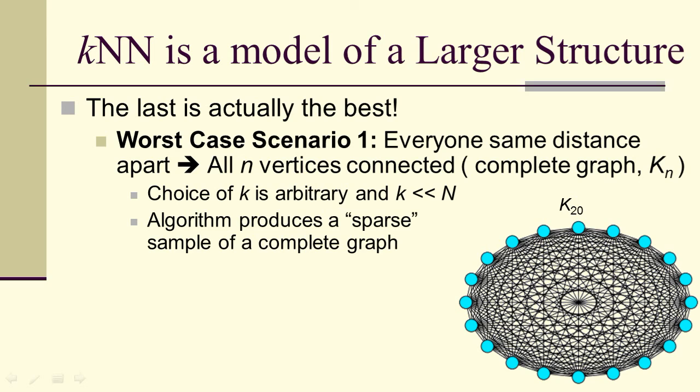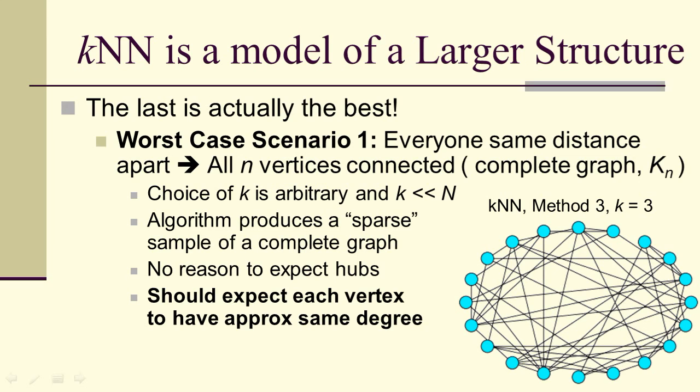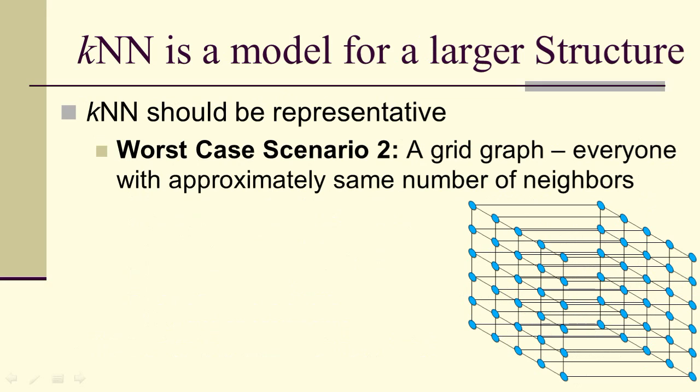What happens if you apply a K nearest neighbor's algorithm to it? The choice of K is arbitrary, and we always choose K much smaller than N for computational reasons. The algorithm produces a sparse sample of a complete graph. Notice, because it's a sparse sample of a complete graph, there really aren't any hubs because no vertex is any more likely to be a hub than any other. We should expect each vertex to have approximately the same degree. Now this is a good representation of the data, but it's not highly clustered.